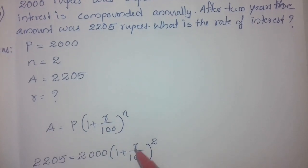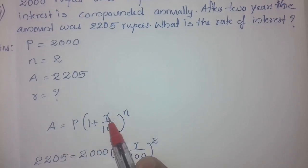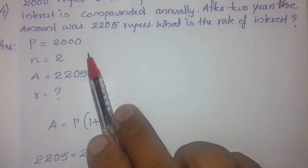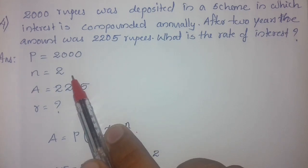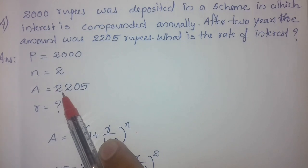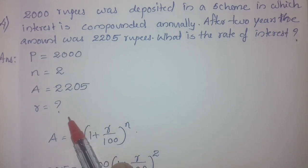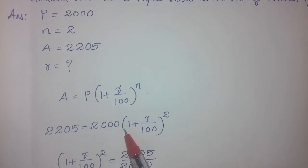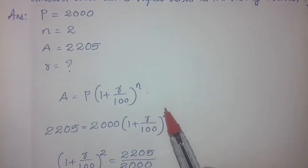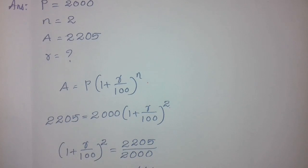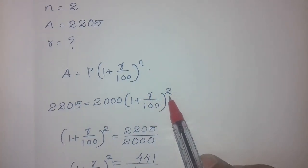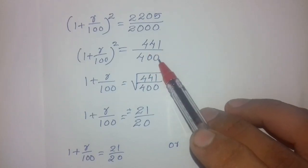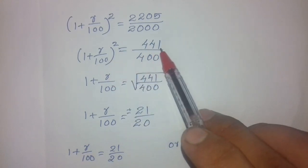We will set up the equation. A is equal to P into 1 plus R by 100, whole raised to n. This is the compound interest formula. Substituting, we get 2000 into 1 plus r by 100, whole raised to 2, is equal to 2205. Dividing both sides by 2000, we get 1 plus r by 100 whole squared is equal to 2205 by 2000, which simplifies to 441 by 400.